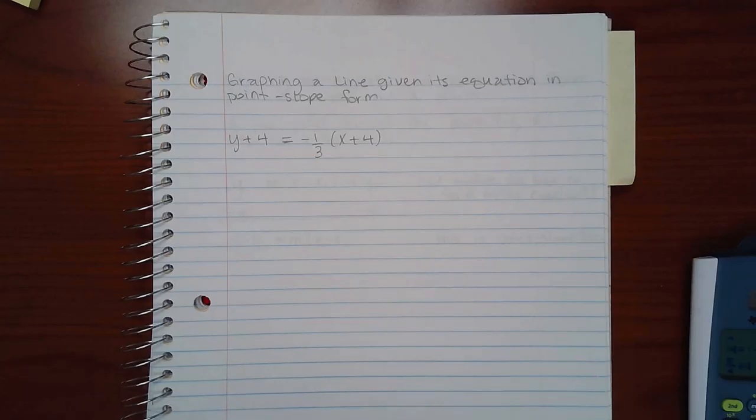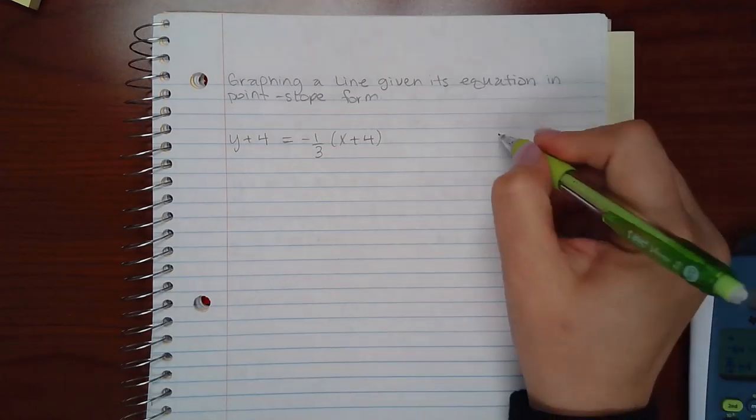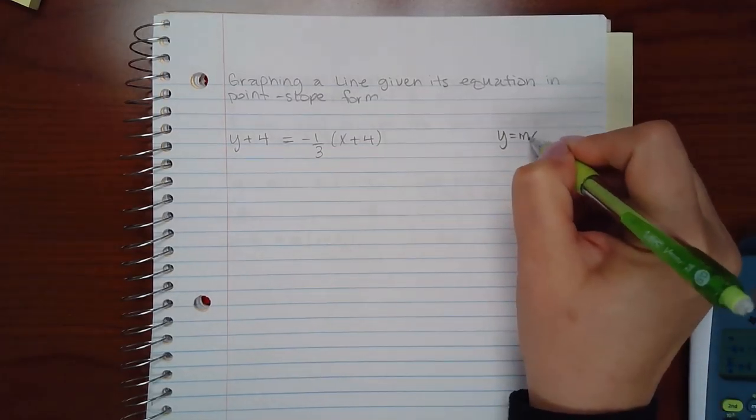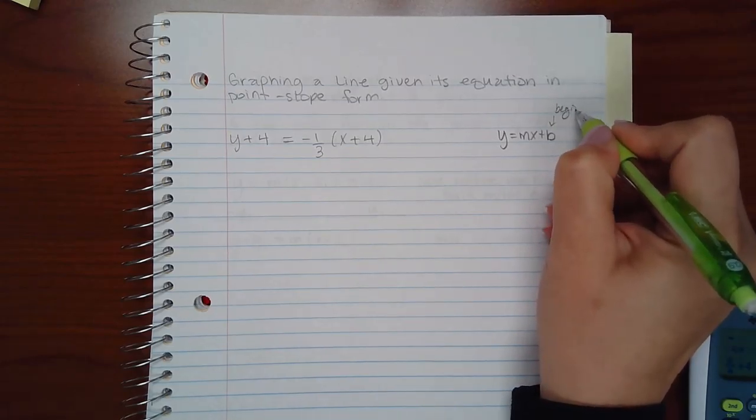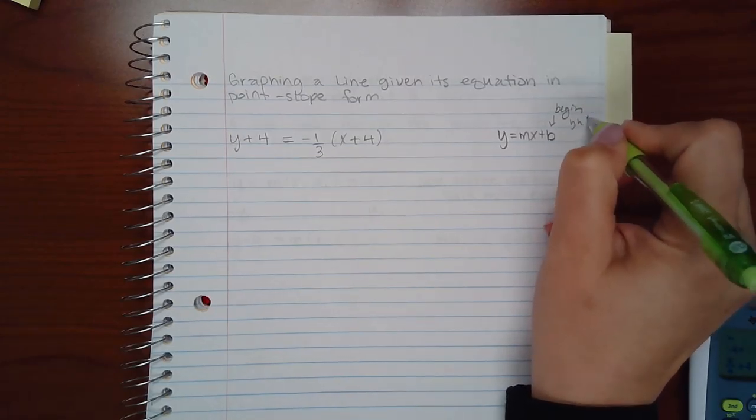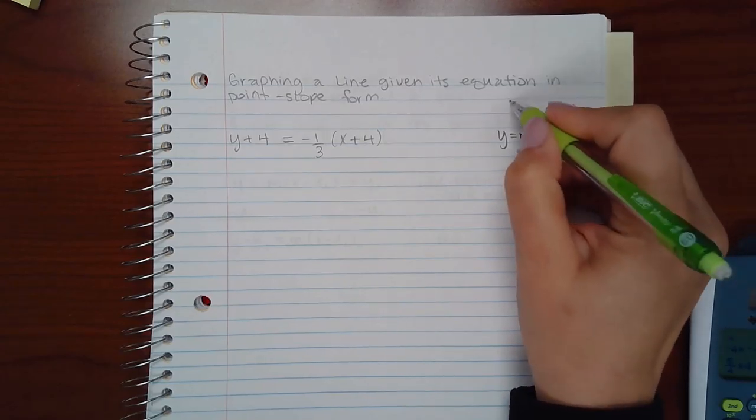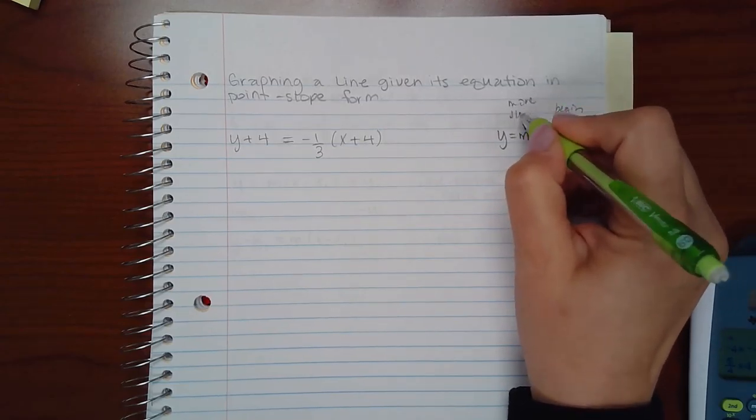This topic is graphing a line given its equation in point-slope form. So in order for me to make it so that I can graph it, you always want to graph it when it's in this form, so that you can begin with this point, which is the y-intercept, and then you can move according to your slope.